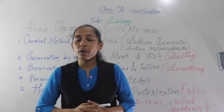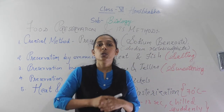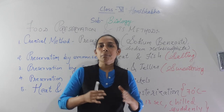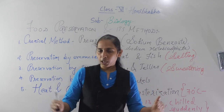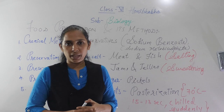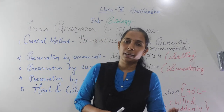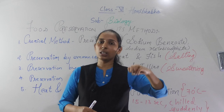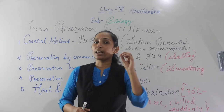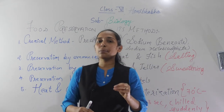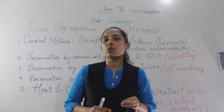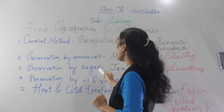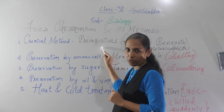Now, why do we add chemicals to food? Because to keep the food material for a long period of time, we are adding certain types of substances in it. And those substances which help to keep the food for a long period of time are called preservatives.